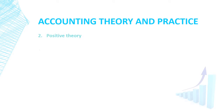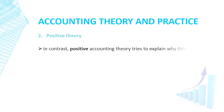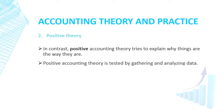Positive theory. In contrast, positive accounting theory tries to explain why things are the way they are. For example, why managers choose a particular accounting method over another, or choose not to invest in research and development activities. Positive accounting theory is tested by gathering and analyzing data.